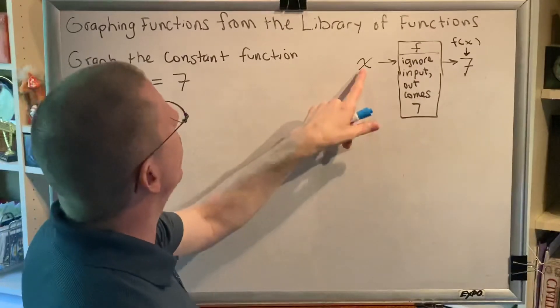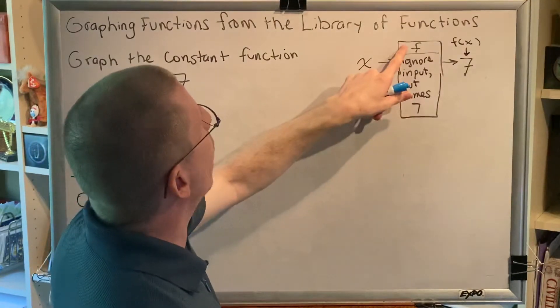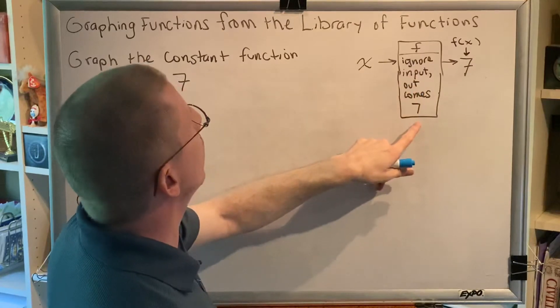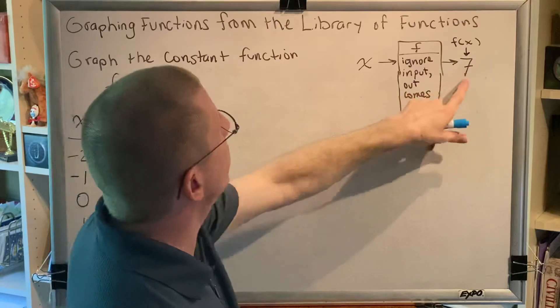So if we look at our diagram, the original input is x. x goes into a machine named f and the instructions of f say ignore the input, out comes 7. So a 7 comes out. It doesn't matter what you put in, a 7 comes out.